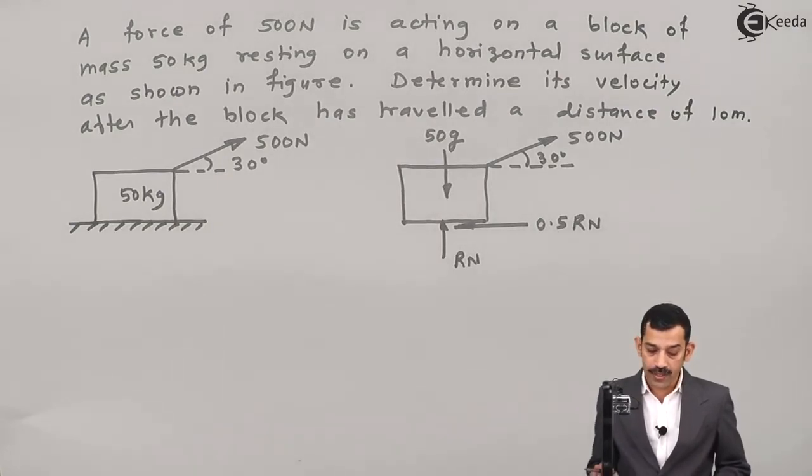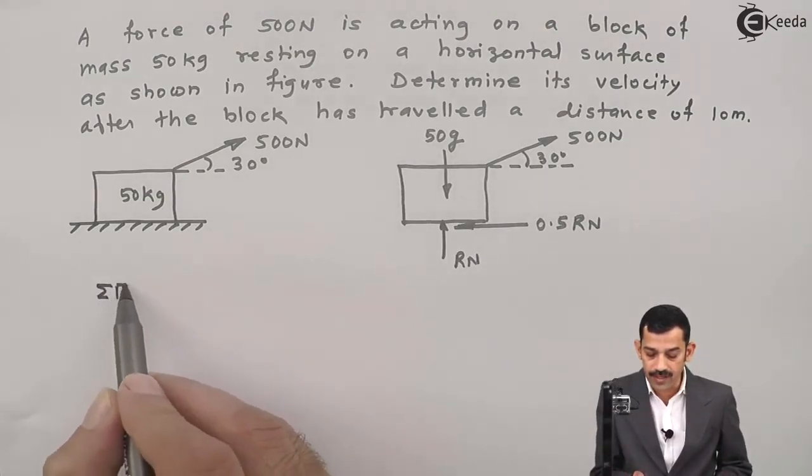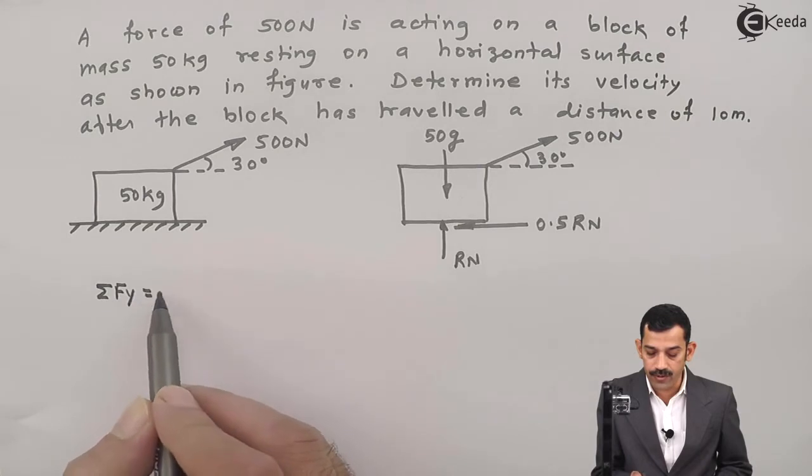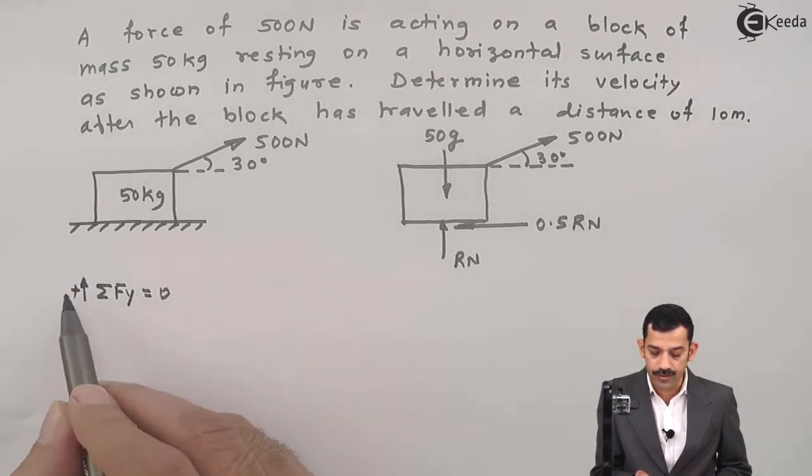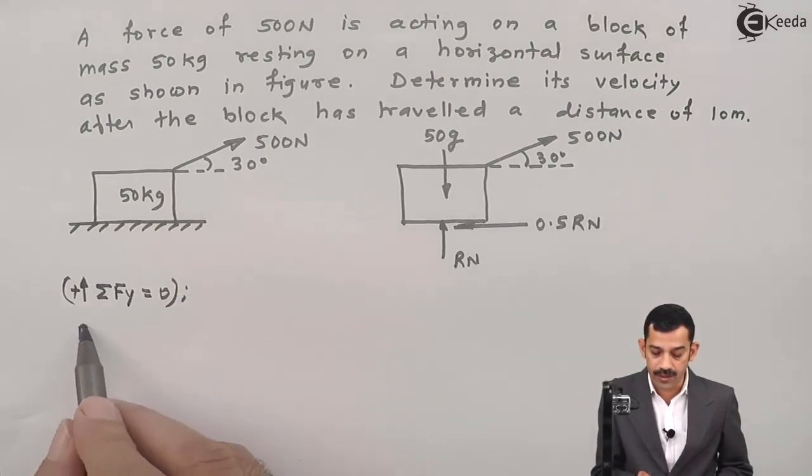Therefore, first we'll find out normal reaction at contact surface. To find out normal reaction, apply equation along y-axis: summation of Fy equal to 0, assuming upward force is positive.